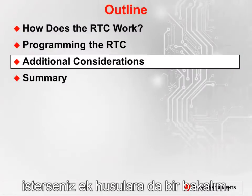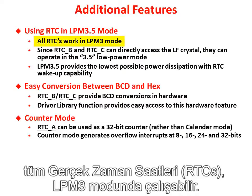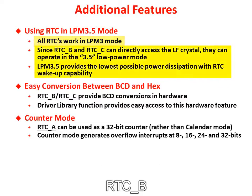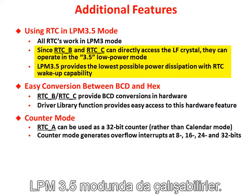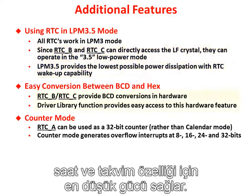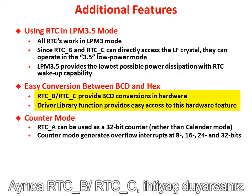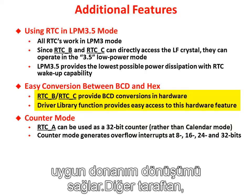Before we finish the chapter, let's look at a few additional considerations. All RTCs can operate in low-power mode 3. Since RTC-B and RTC-C can directly access the low-frequency crystal, they can also operate in LPM 3.5 mode, providing the lowest-power timer calendar feature. RTCs B and C also provide convenient hardware conversions between BCD — binary coded decimal — and hex, if you should need it.